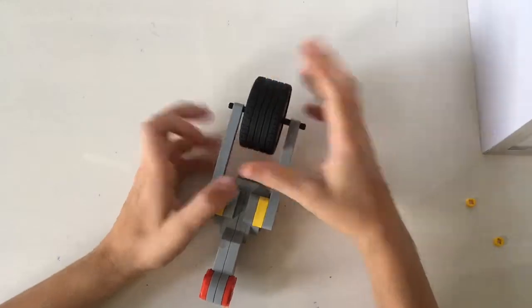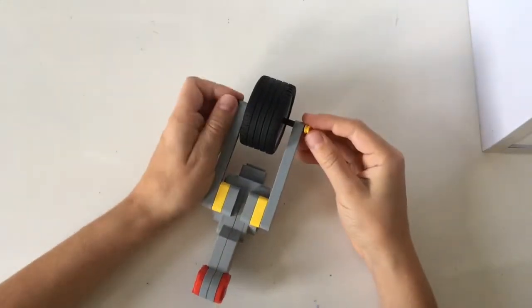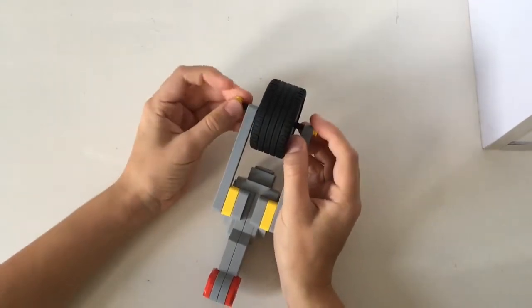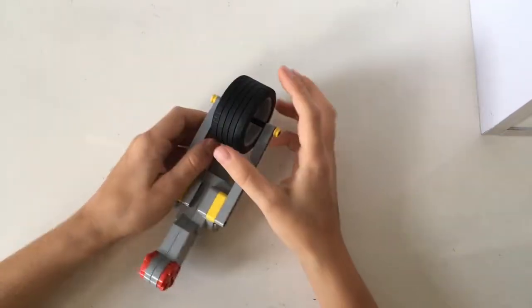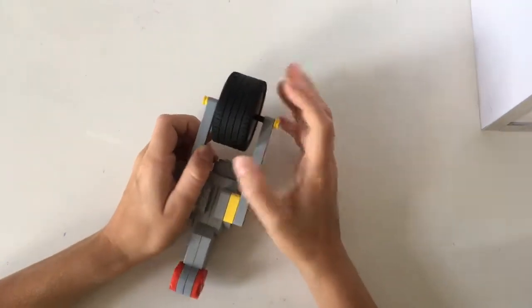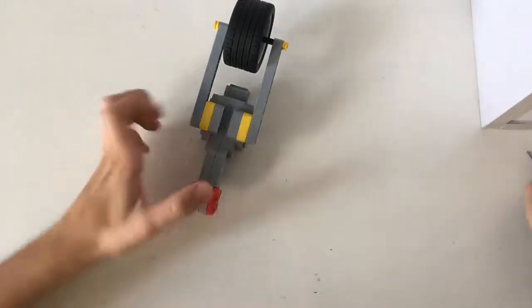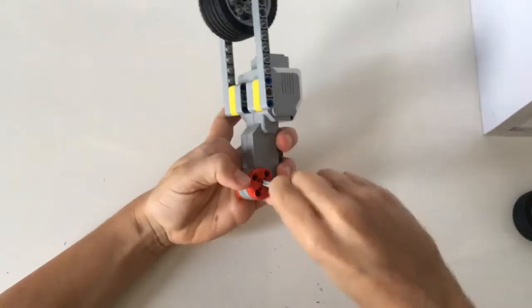So we take two of those yellow details and put them here. So now the wheel can't go anywhere there and that's what we want obviously. Then we take a stick again and put it in the motor right here.